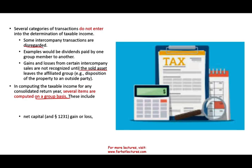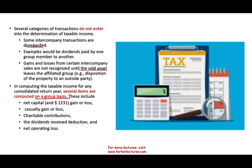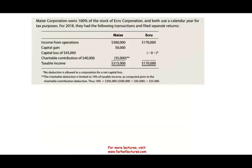The items computed on a group basis include: net capital gains and capital losses, Section 1231 gains and losses, casualty gains or losses, charitable contributions, dividend received deduction, and net operating losses. There are a lot of benefits for the consolidated return, and the best way to illustrate this is to look at an example to show you the effect of a consolidated return.